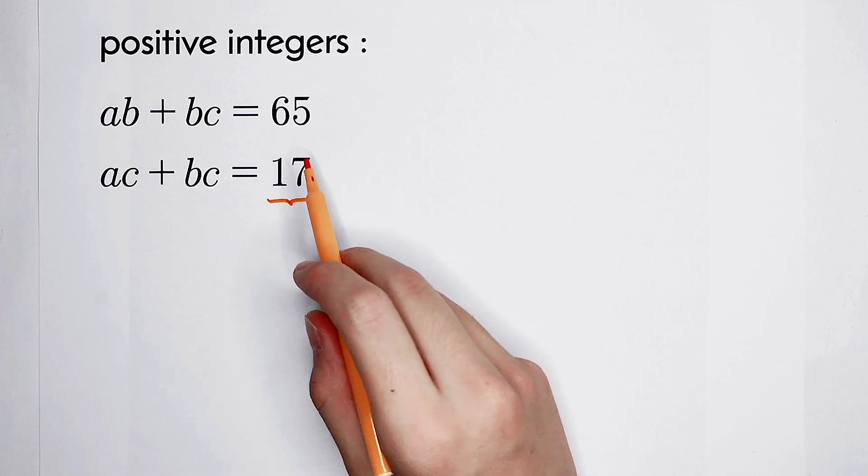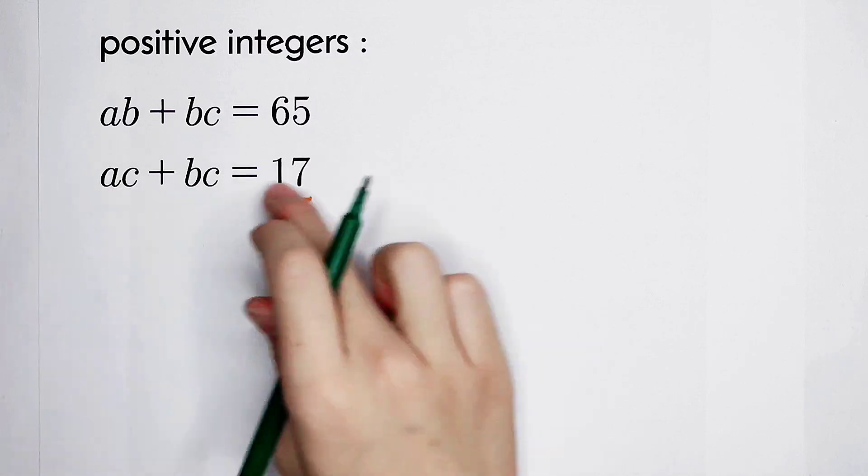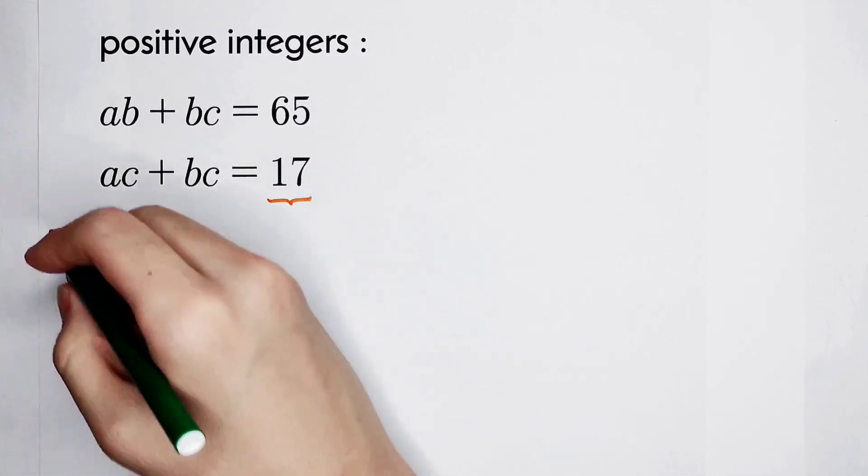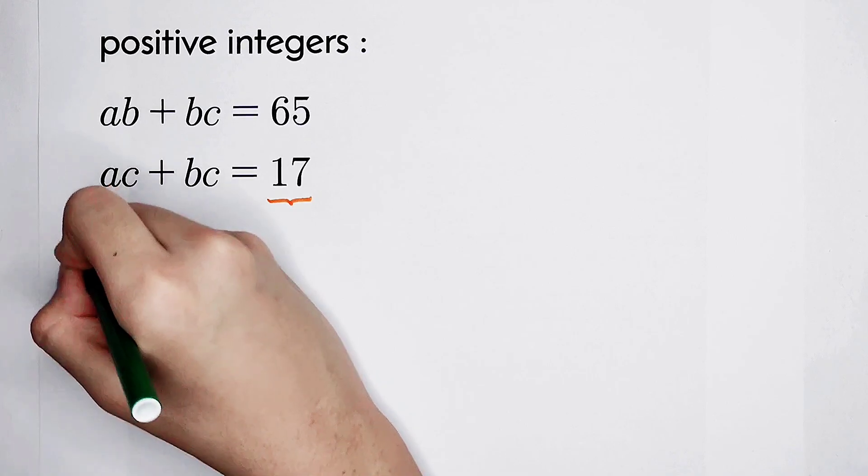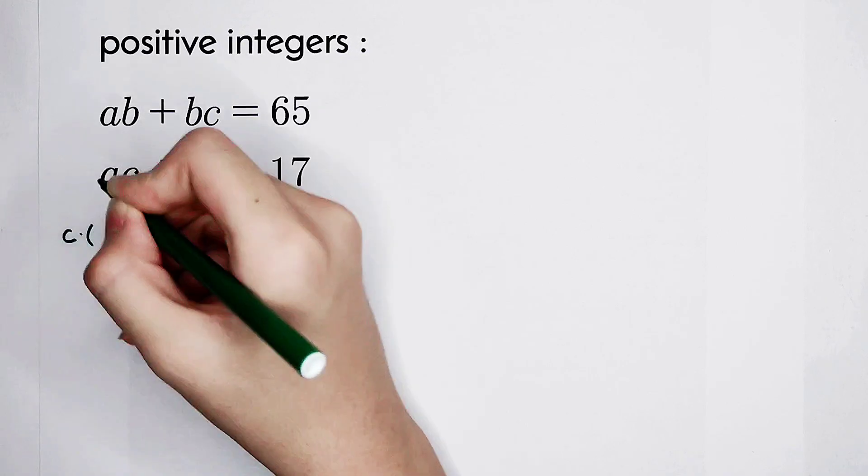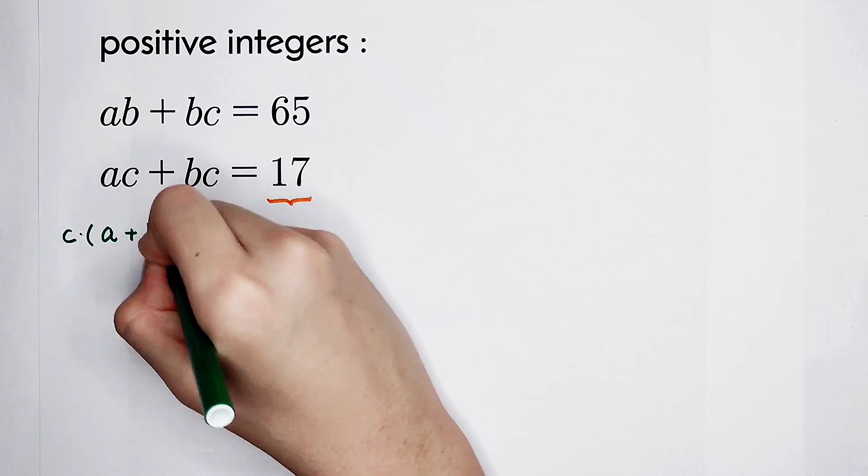The main reason is 17 is a prime number, but 65, not. In the first step, the form of the left-hand side of this equation should be changed. And c should be taken out. And in the bracket, it is a plus b.